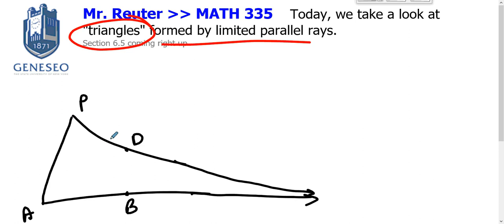Remember, ray PD is parallel to ray AB, but it's the first ray that's parallel to ray AB, so it really does almost touch ray AB. This shape, some geometers have said, is basically a triangle.